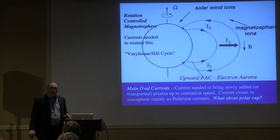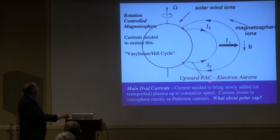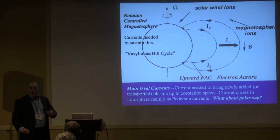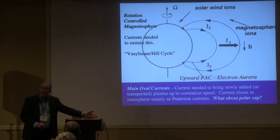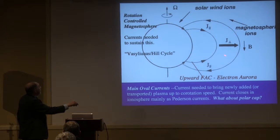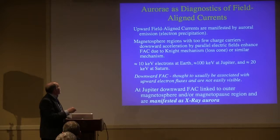You've seen this. You see the main oval from the upward field-line currents. We're interested in what's happening up in the polar cap. The ion aurora is associated with downward currents, also upward electrons, and you usually don't see those. With X-rays, we think you're seeing them now — you're seeing the downward currents. So what's happening up in the polar cap with the return currents? Aurora are diagnostics of field-aligned currents.